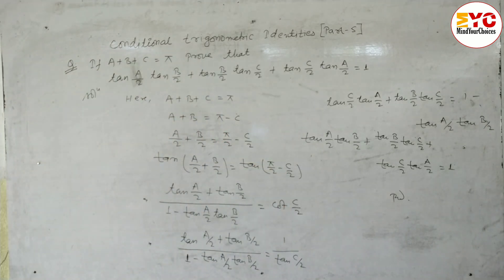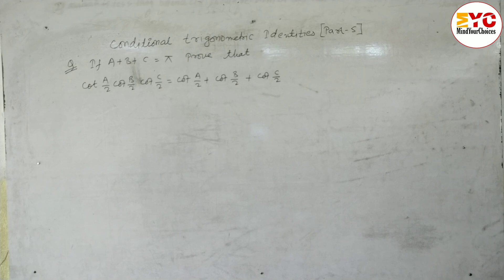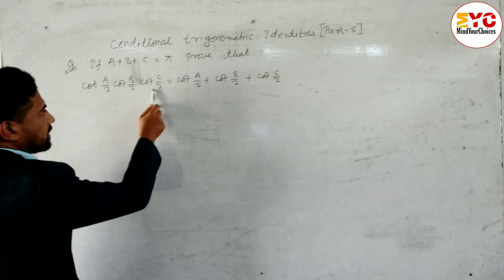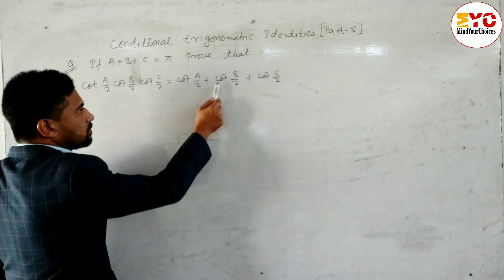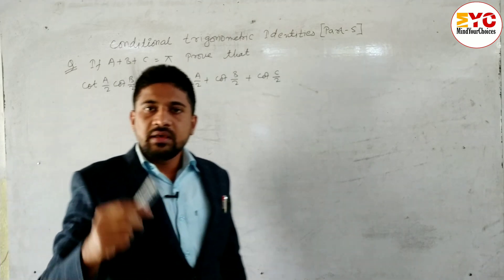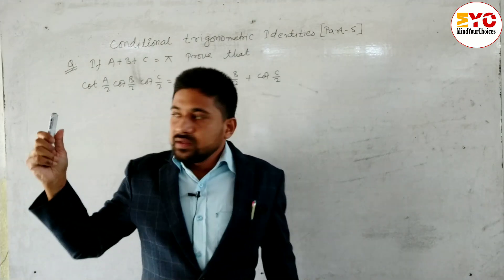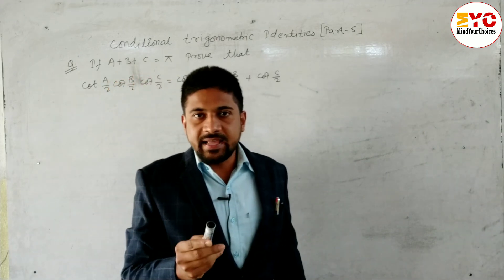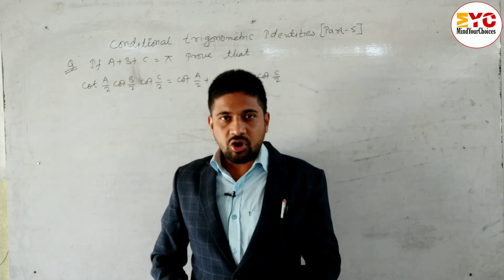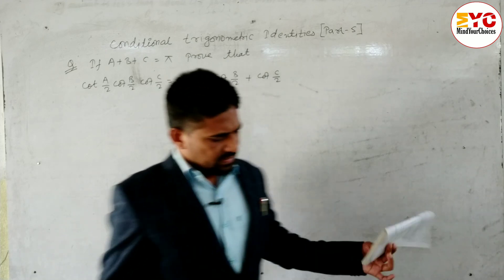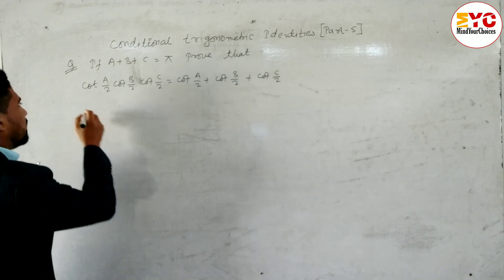Now the next question: if a plus b plus c is equal to pi, prove that cot(a/2)cot(b/2)cot(c/2) is equal to cot(a/2) plus cot(b/2) plus cot(c/2). Since the expression is in the form of cot, we take the given condition a plus b plus c equals pi and take cot both sides. No need to take LHS or RHS.